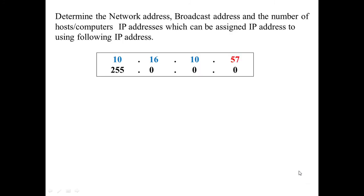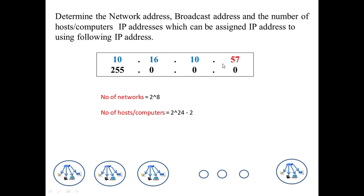As a worked example, given an IP address starting with 10, we need to find the network address, broadcast address, and the number of assignable host addresses. Since the first byte 10 falls in the Class A range, Class A uses one byte for the network portion and three bytes for the host portion. To find the network address, we convert all three host bytes to zero.